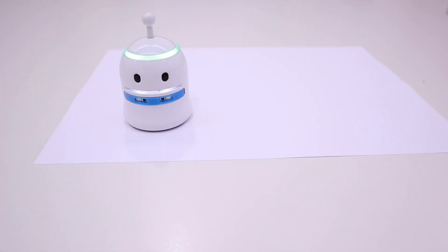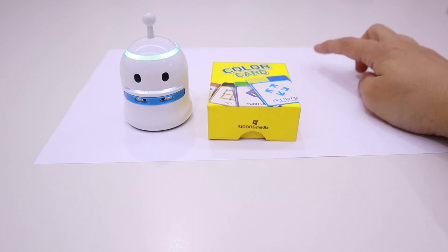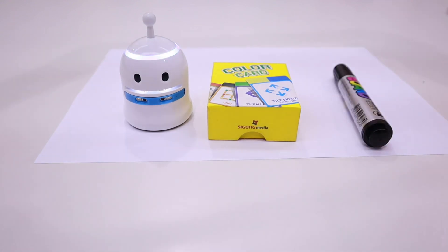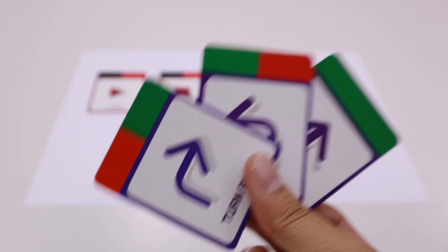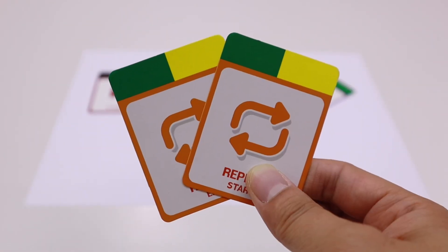Today, we need a robot, coding card, A4 paper, markers, and a ruler. The coding cards are start, end, move card, number card, and repeat card.